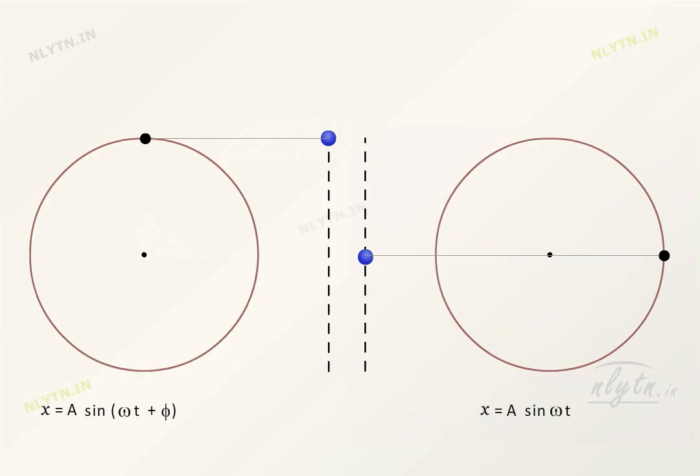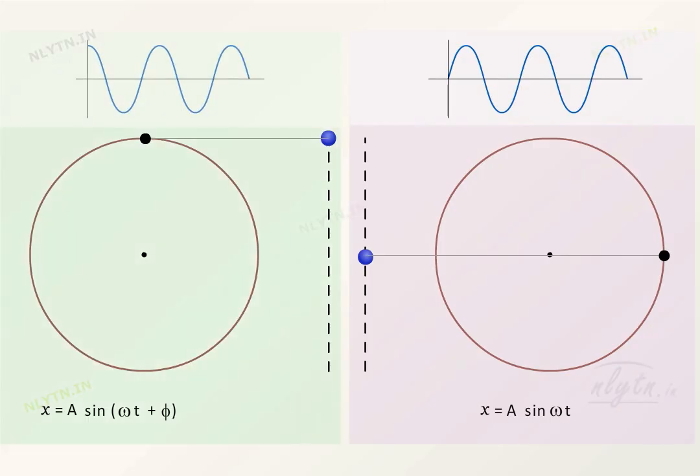That is, if this SHM follows a sine function, then the other will follow a cosine function. This is evident if we write phi equal to phi by 2 in this equation, because then this term will be equal to cos omega t.